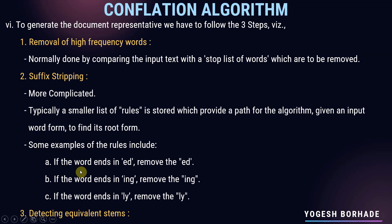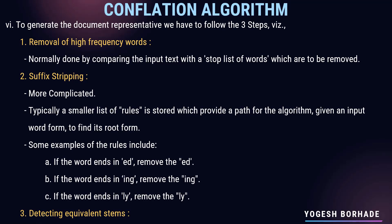For suffix stripping, three example rules are: (1) if the word ends in 'ed', remove the 'ed' — for example, 'walked' becomes 'walk'; (2) if the word ends in 'ing', remove the 'ing' — for example, 'drinking' becomes 'drink', which represents the same meaning; (3) if the word ends in 'ly', remove the 'ly' — for example, 'closely' becomes 'close', which does not affect the real meaning of the word.